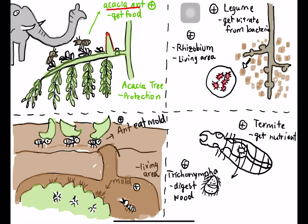In the acacia-ant mutualism, the acacia ant lives in the thorn of the acacia tree as a living area. The ant gets nutrients from the nectar gland and yellow bodies on the tree, which provide protein to the ant. When the acacia is attacked by predators or herbivores such as an elephant, the acacia ants will bite the elephant so it goes away.